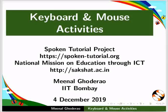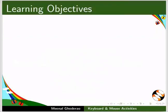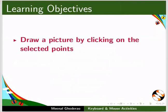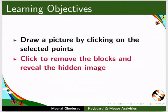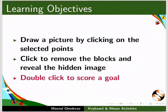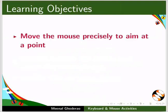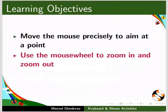Welcome to the spoken tutorial on keyboard and mouse activities in Gcompris. In this tutorial, we will learn how to draw a picture by clicking on the selected points, click to remove the blocks and reveal the hidden image, double click to score a goal, move the mouse precisely to aim at a point, and use the mouse wheel to zoom in and zoom out.